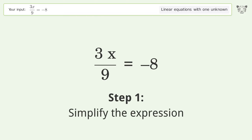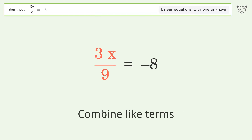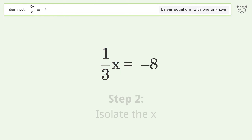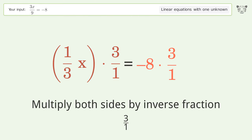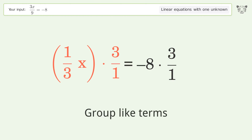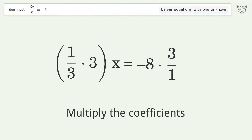Simplify the expression and combine like terms. Isolate the x by multiplying both sides by the inverse fraction 3 over 1. Group like terms and multiply the coefficients.